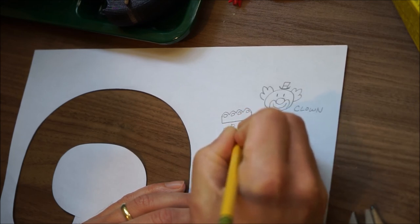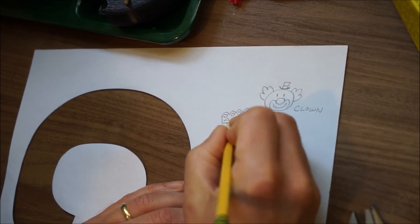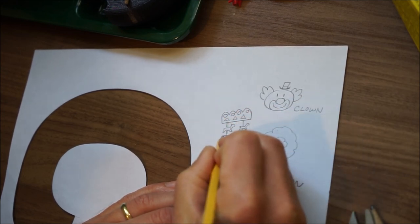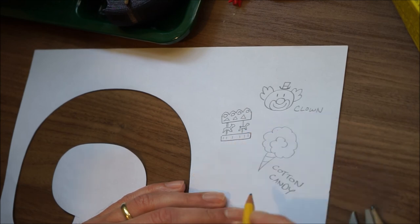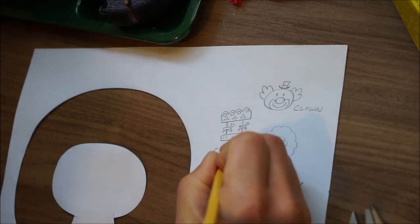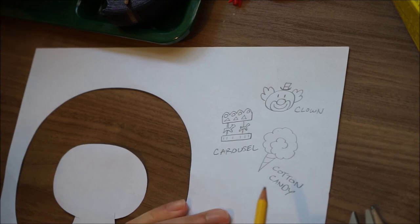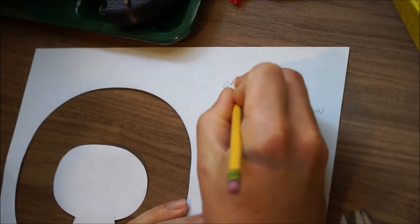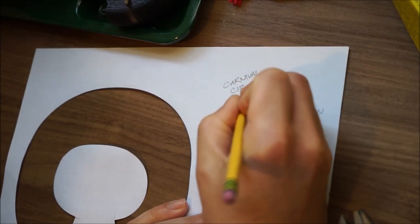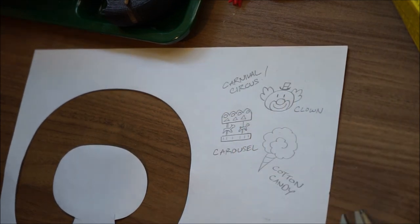We're going to make copies of these anyway, so let's have a copy and a copy. Yes, in the back, that is a carousel. Can anybody guess what our theme is for our letter C? Yep. Carnival, circus, whatever you want it to be. All of these objects and events start with the letter C.